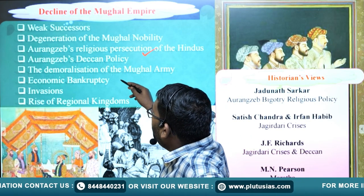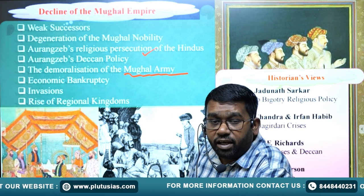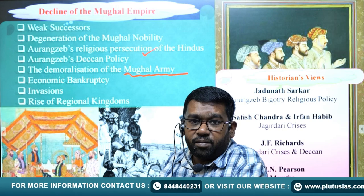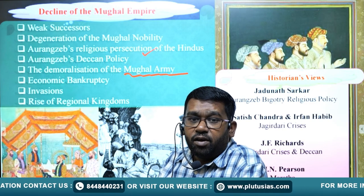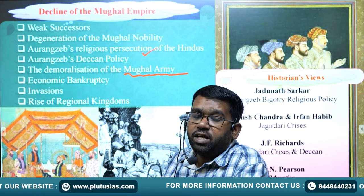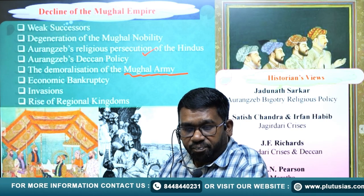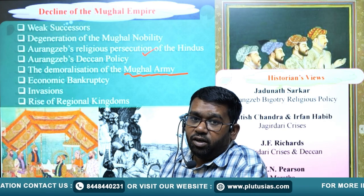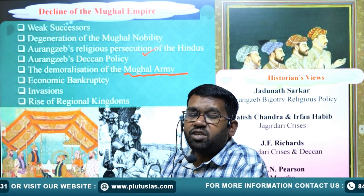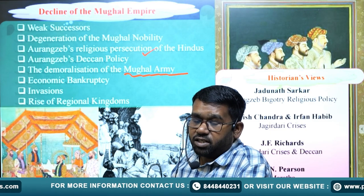The fourth cause is the demoralization of the Mughal army. Aurangzeb spent the last 27 years of his life in the south, in the Deccan and Aurangabad, dealing with Shivaji's successors and problems in Golconda and Bijapur. As a result, the armies became very tired and demoralized.